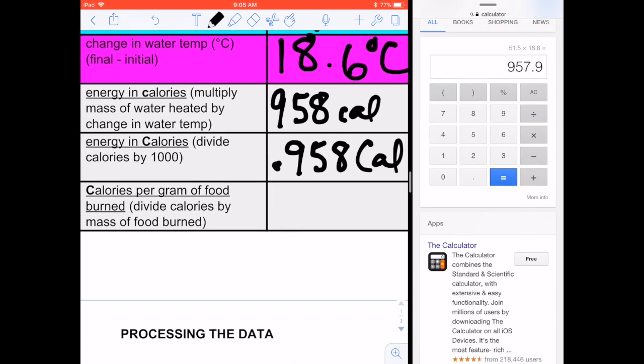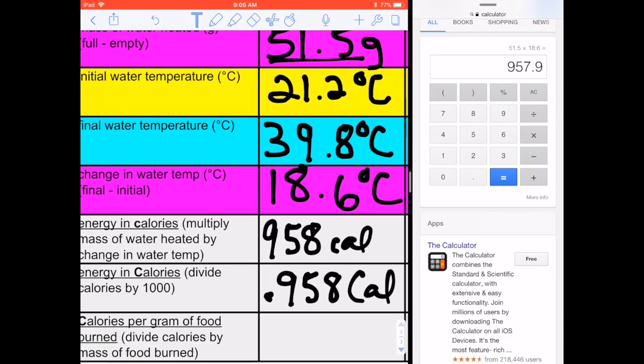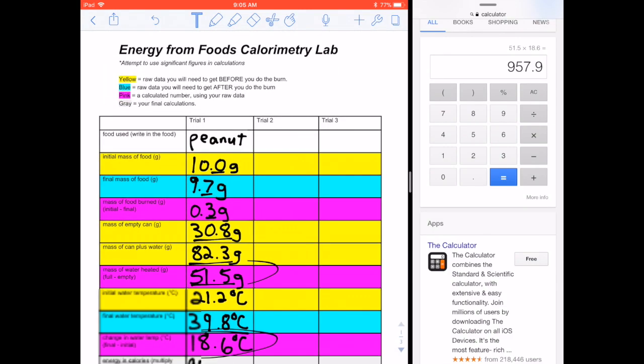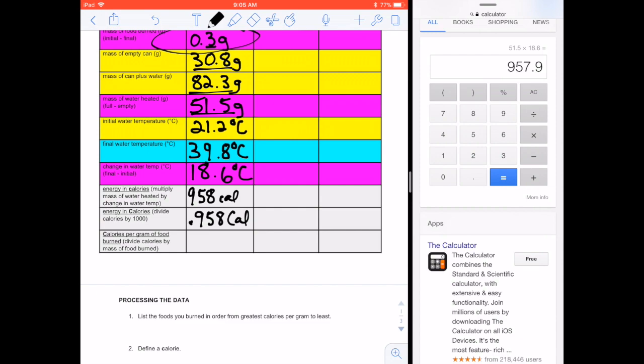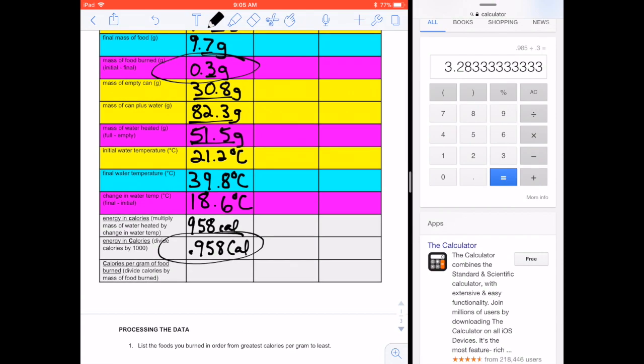And then calories per gram of food burned. Well, I have to look back up and see how many grams of food did I burn. In this case, 0.3 grams. So 0.958 divided by 0.3 equals 3.28.